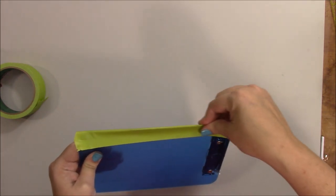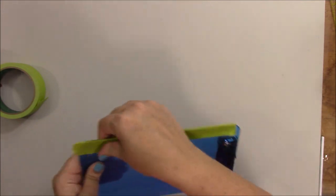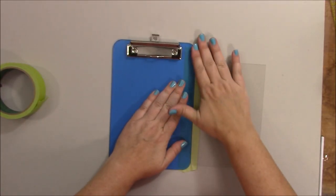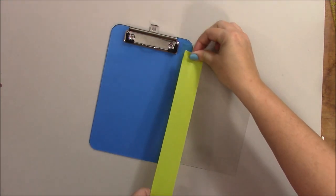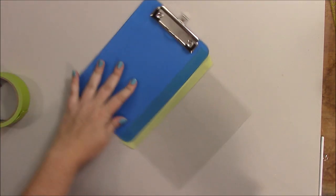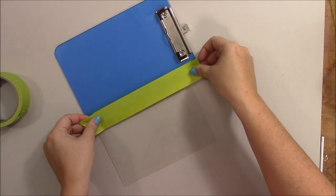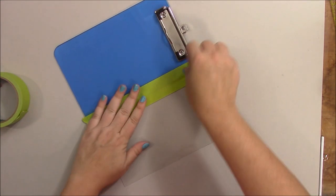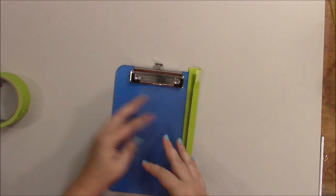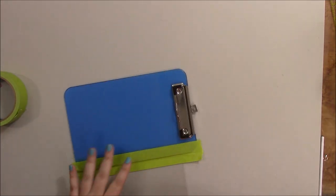Fold the tape over to the back. Then open up your plastic, and we're going to put another piece of tape right down the middle there. Alright, now I'm just going to trim off the excess.